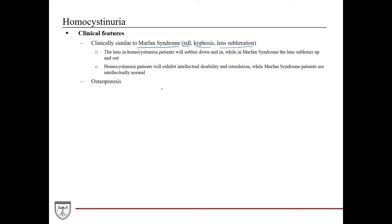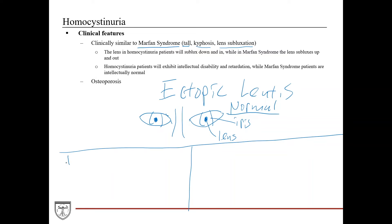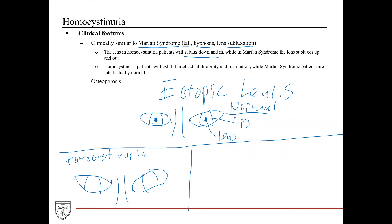Lens subluxation — also known as ectopia lentis — is one way you can differentiate the two conditions. In homocysteinuria, the lens subluxes down and in, or inferiorly and medially. So the lens is displaced downward and inward towards the nose, or nasally.